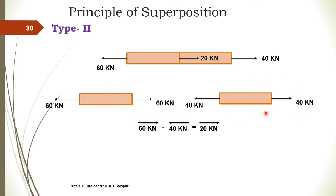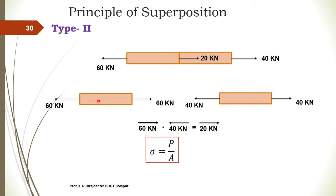Once the forces on each body are calculated, this converts into the basic first type. Using the equation stress equals load divided by area, we find the stress induced in each body. For change in length, we use delta L equals PL divided by A for each body separately, then add the change in length of the first body and second body to get the total change in length.